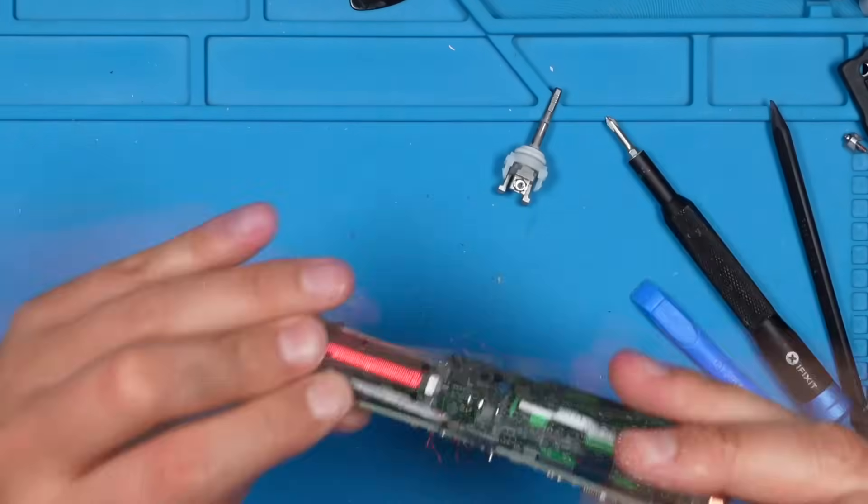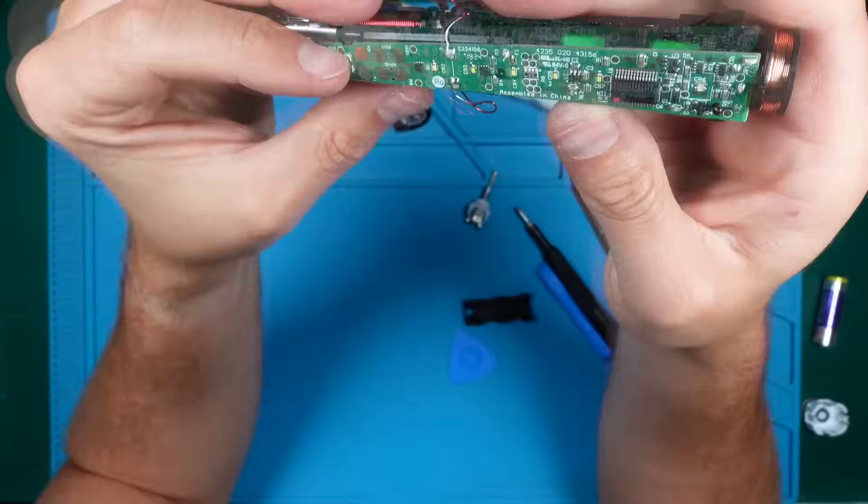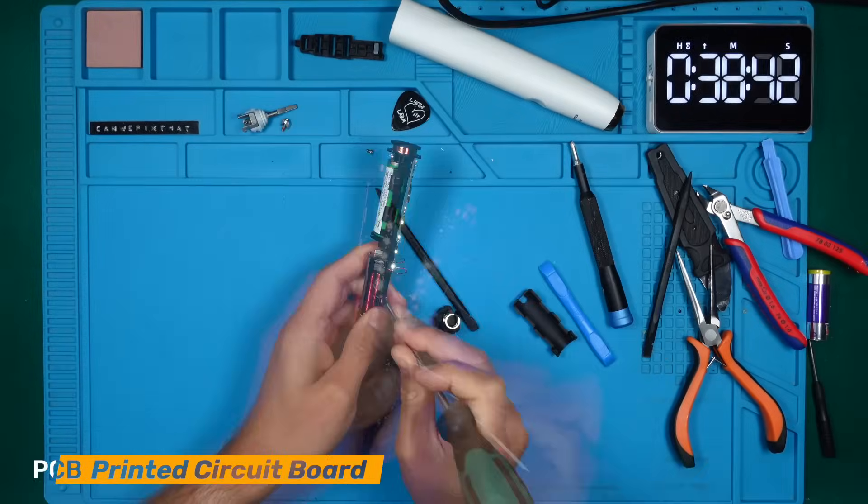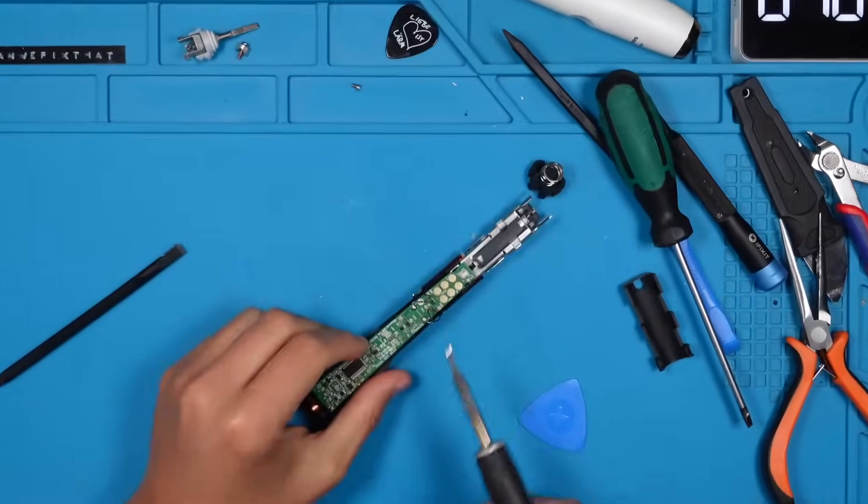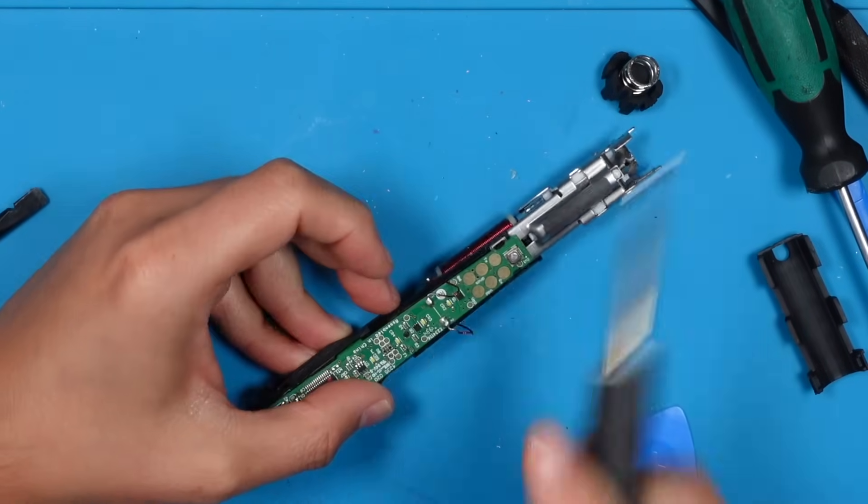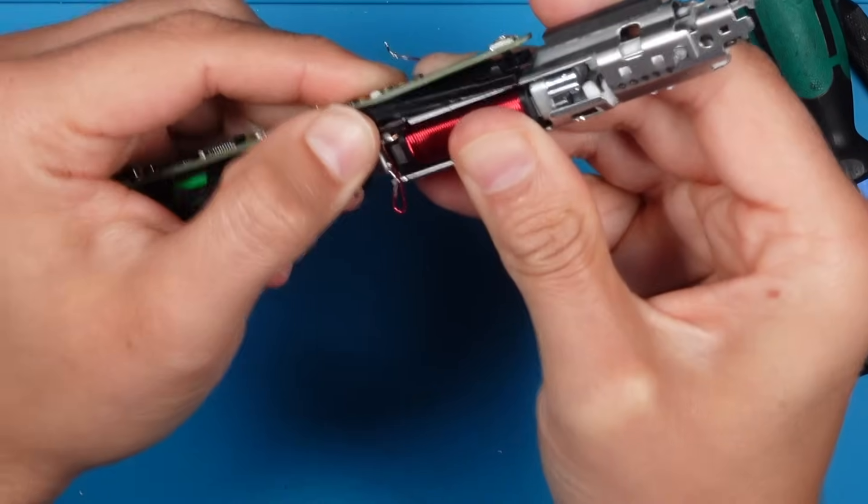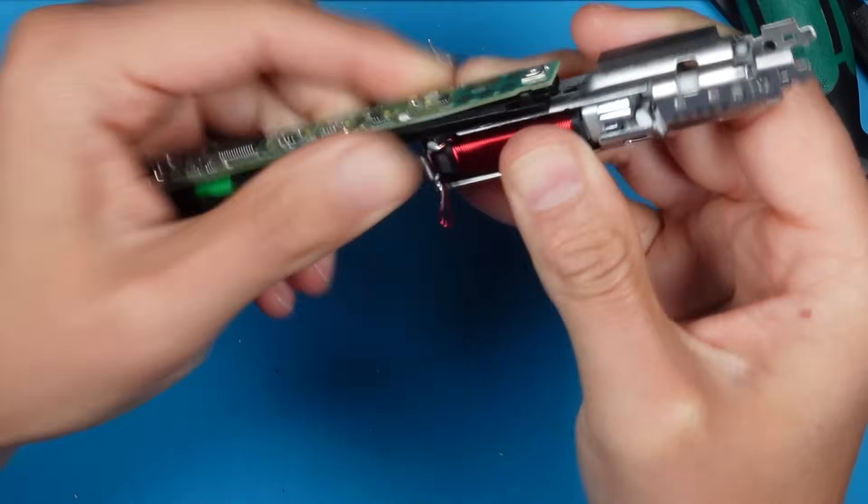The other screw is hidden under the electronics, the PCB. It took me some time to figure out how to get under it. Let me show you. First, let's unsolder the wires of the coil. That makes our life easier.